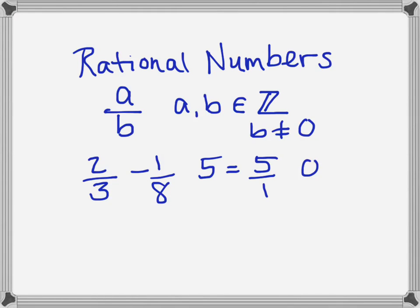Zero is a rational number because zero could be written as zero over anything — zero over anything equals zero, so I could make this a 15 or something like that. Fractions can be positive or negative, and all of these would be considered rational numbers.